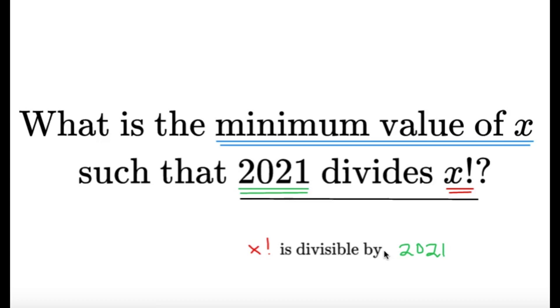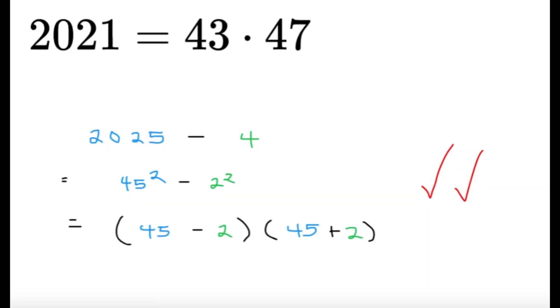Now, first, let's try to make some primary observations on this number because some of you might already know that 2021 is 43 times 47, but just in case you don't know and you want to be convinced about it, you can take a look at this proof here. Well, 2021 is 2025 minus 4.